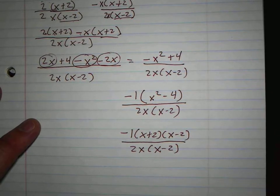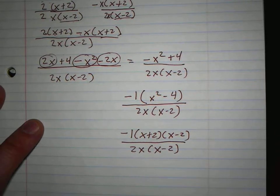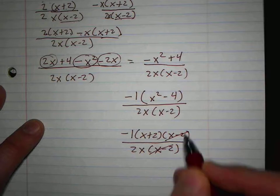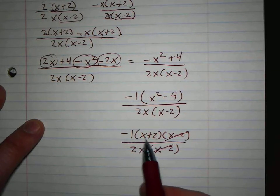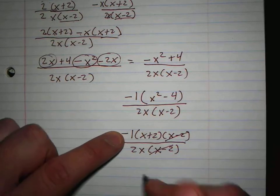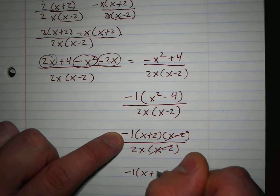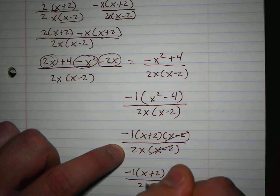Does anything cancel? Yes. x minus 2's. These 2's can't cancel because that has a plus sign. Can't cancel these x's because x plus 2's together. So you get negative 1, x plus 2, over 2x.